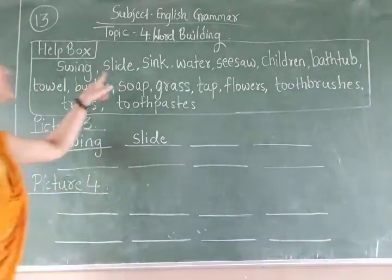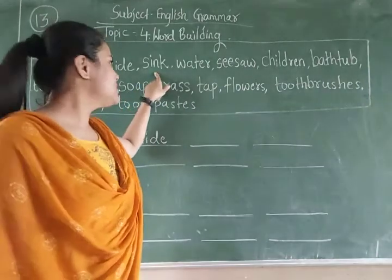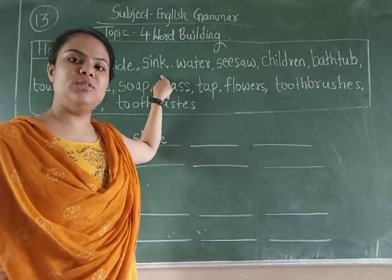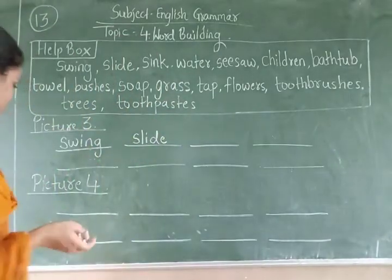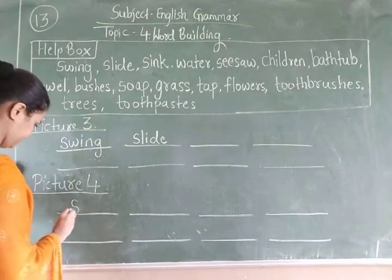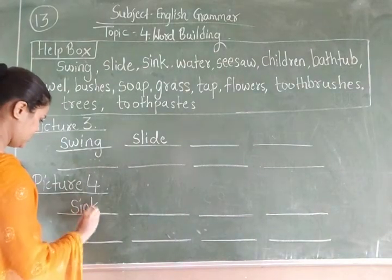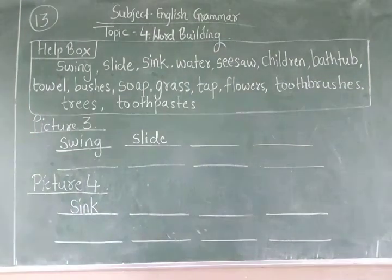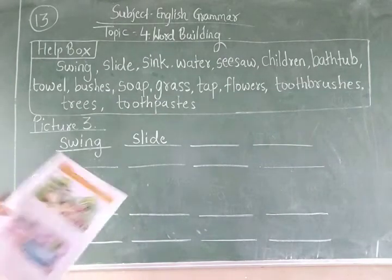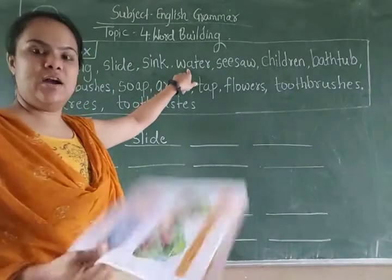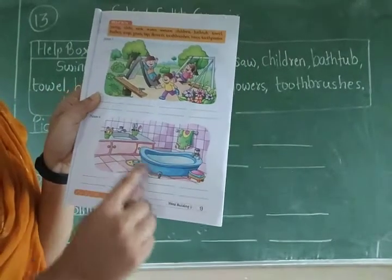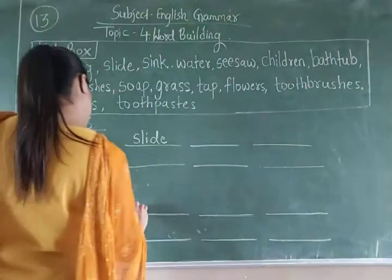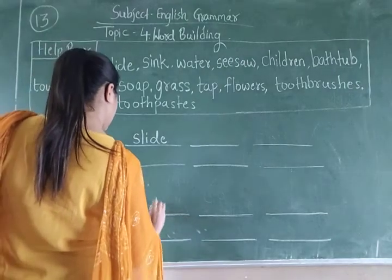Next one: S-I-N-K — sink. Sink ka matlab kya hota hai? Sink means basin, jahan hum hand wash karte hain aur face wash karte hain. So it belongs to picture number 4. Write down S-I-N-K, sink. After that: W-A-T-E-R — water. Where can you see water? In picture number 4, in the bathtub there is water. Write down W-A-T-E-R, water.